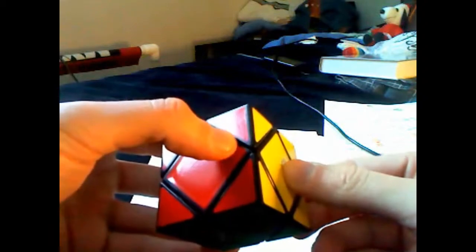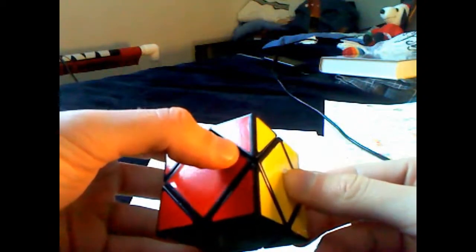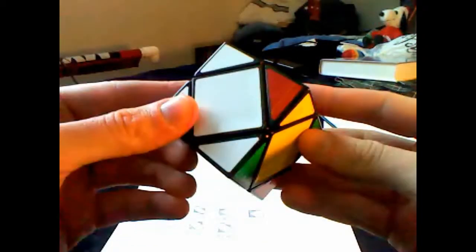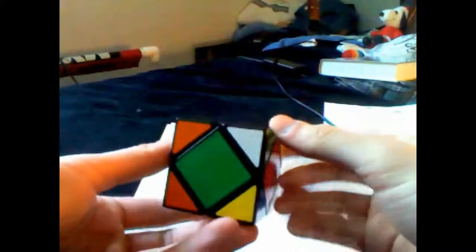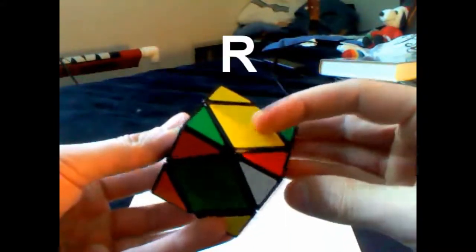The last corner is the trickiest, however. There are only three orientations it can have. The first case is that the corner is oriented correctly, like this. It can be placed in a max of one move.